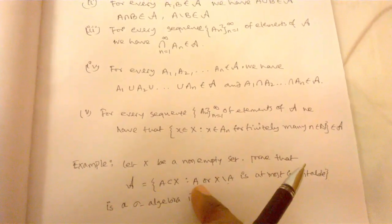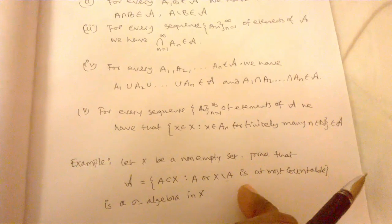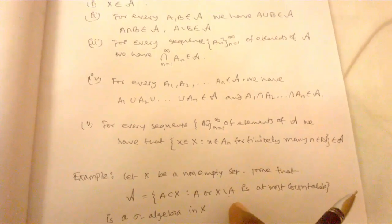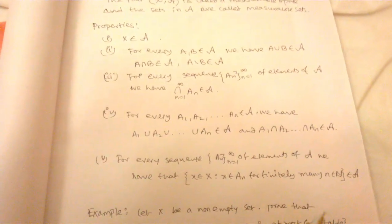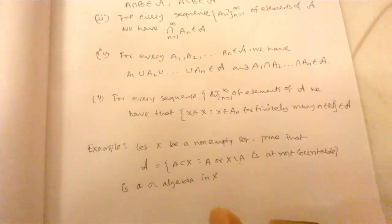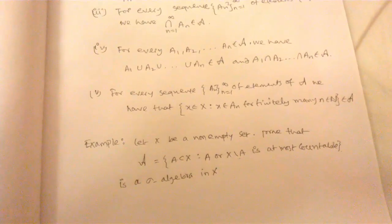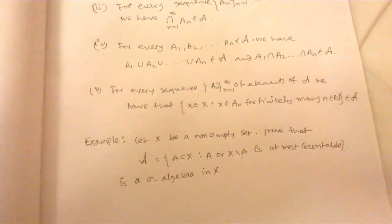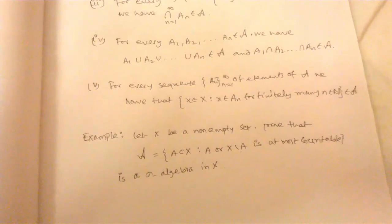Third is just taking A1, A2, A3 dot dot An. Then the collection will be at most countable. Countable union of countable subsets is also countable.